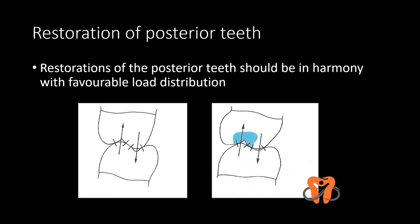Coming to the restoration of posterior teeth: the same principles apply. A normal tooth with its contacts has occlusal forces well directed along the long axis. When a restoration is given in which the contacts have been recreated, the occlusal forces are directed favorably. Therefore, all restorations should be done in a manner that is in harmony with favorable load distribution.